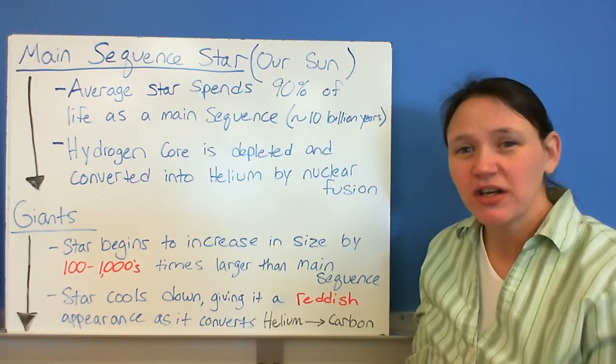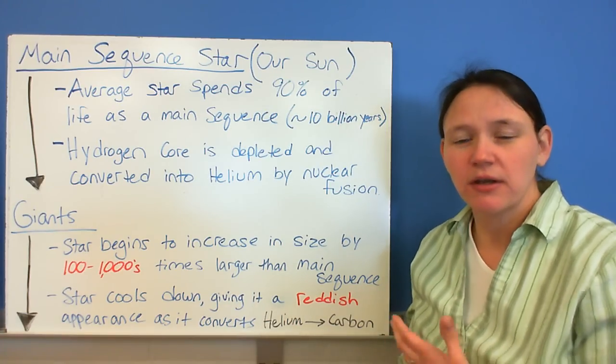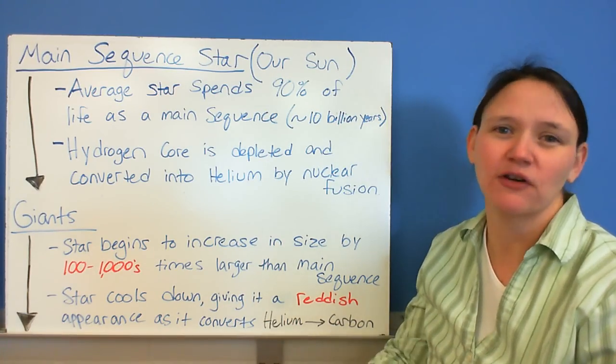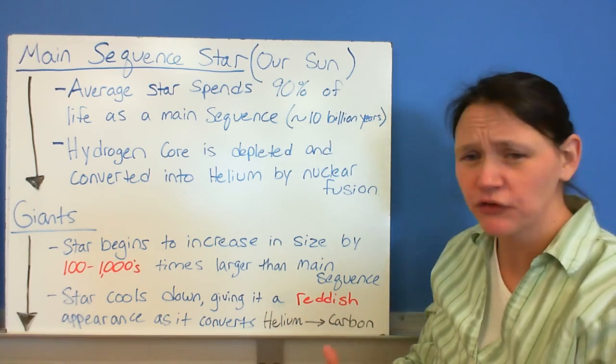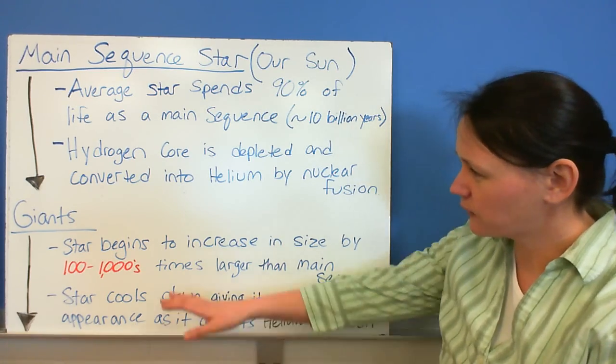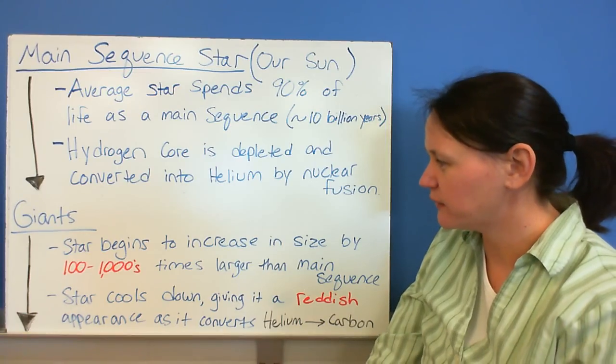In the core, hydrogen is being used for the nuclear fusion, but it's starting to get depleted, and it's going to start to eventually run out. And that's where you end up going into the giant stage.